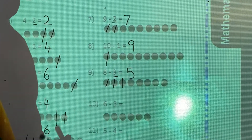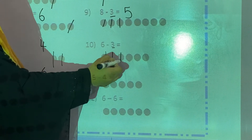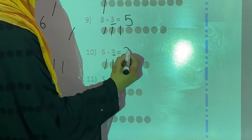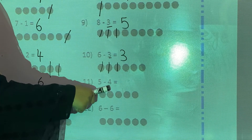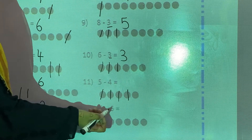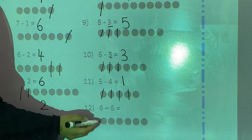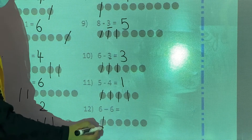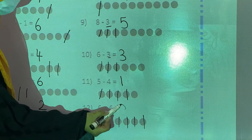Now the 10th question: 6 minus 3. How many do you have to cut? 3 dots — count: 1, 2, 3. How many are left? 1, 2, 3. So 6 minus 3 is equal to 3. Now 5 minus 4 — you have to cut 4 dots: 1, 2, 3, 4. How many are left? Only 1 — so 1 is the answer. Now 6 minus 6: there are 6 dots total and you cut all 6 — 1, 2, 3, 4, 5, 6. No one is left, so 0 is the answer.